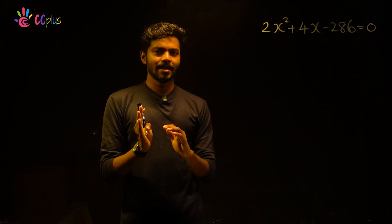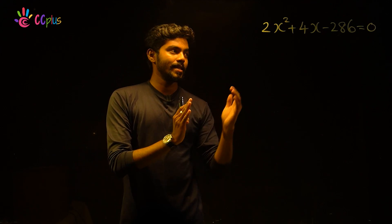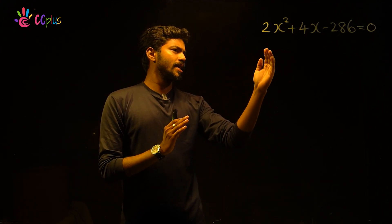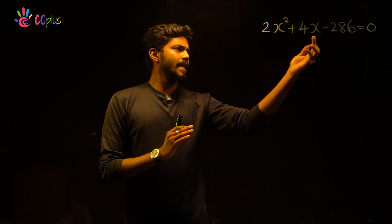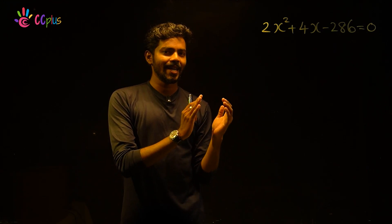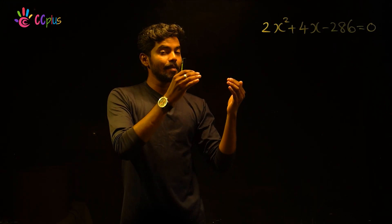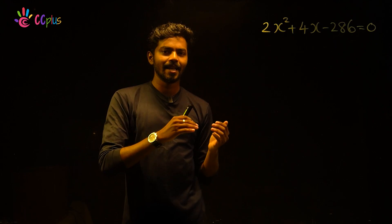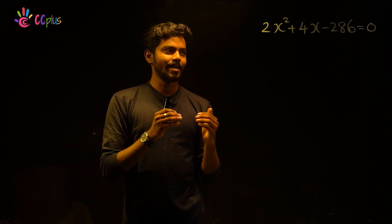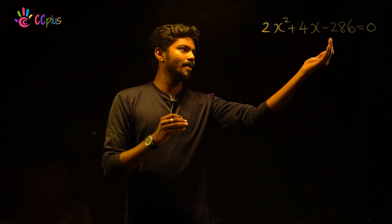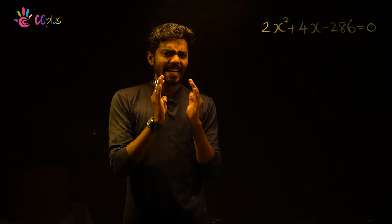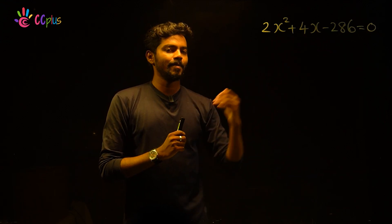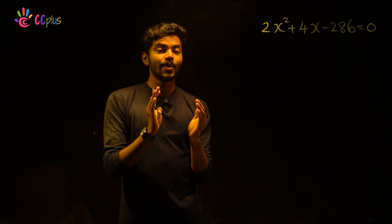Now we can simplify this quadratic equation. We notice that 2 is common to all terms, so we apply the reducible formula and divide through by 2 to make the problem easier.